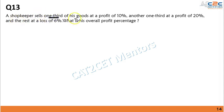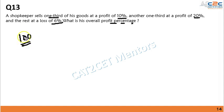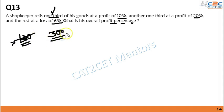A shopkeeper sells one-third of his goods at 10% profit, another one-third at 20% profit, and the rest at 6% loss. What is the overall profit percentage? Instead of assuming 100, assume the total value is 300, since 100 is not divisible by 3. Choosing the right number for calculation is very important to save time.